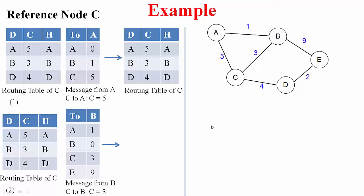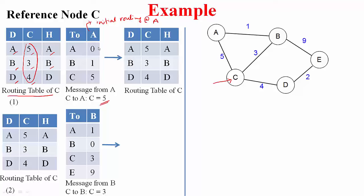Let us see how this works with an example. We focus on node C. This is the initial routing table of C: it maintains information only about its neighbors A, B, and D with their respective costs, and since it can directly reach them the next hops correspond to the destinations. Now suppose C receives a message from A — this is A's initial routing table. C knows the cost from itself to A is 5, so it adds 5 to all of A's information and compares with its current estimates. If A's information provides a better cost, C replaces the next hop with A and changes the cost accordingly.